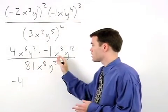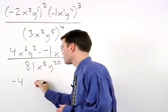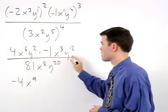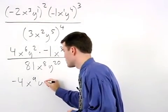So we have x to the sixth times x to the third, which is x to the sixth plus 3, or x to the ninth. y squared times y to the twelfth is y to the 2 plus 12, or y to the fourteenth.